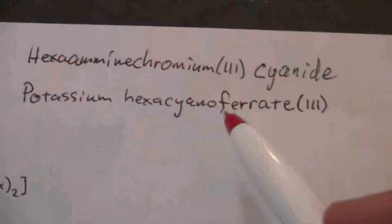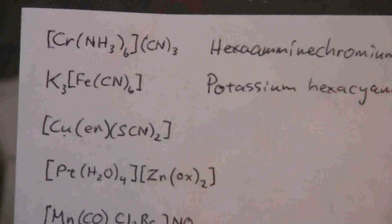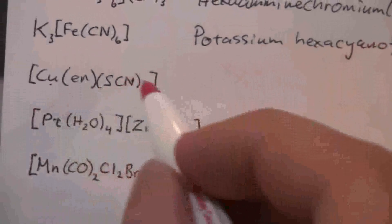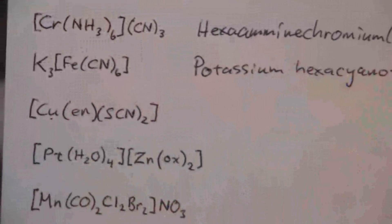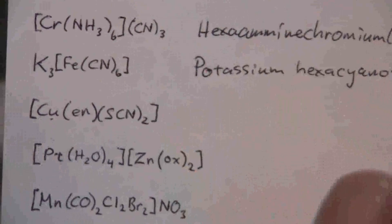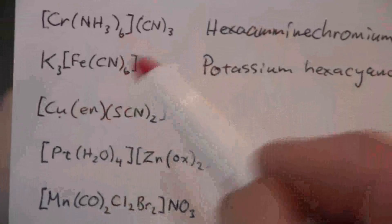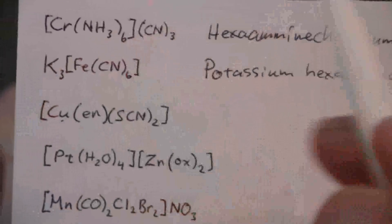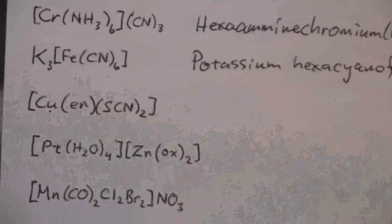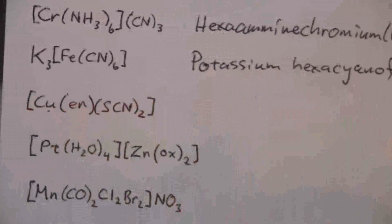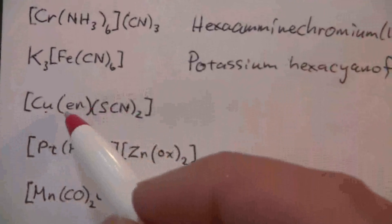All right, now with this one you'll notice this isn't an ionic compound, okay? It is a complex compound, but it's not an ionic compound where we have a cation and an anion. It just balances out with the charges of the ligands, okay? But we name it the same way as though this were a cation.